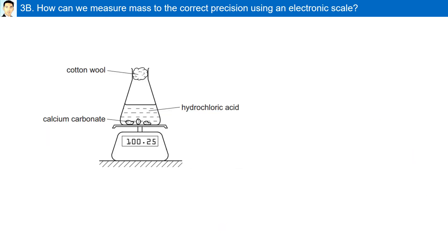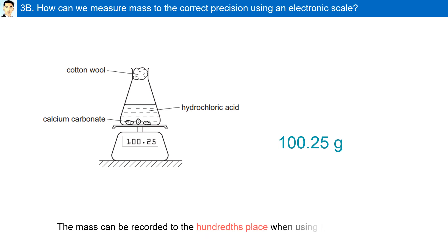How can we measure mass to the correct precision using an electronic scale? An electronic scale provides you the level of precision. In this example, the mass is 100.25 grams. It can be recorded to the hundredth place when using this balance.